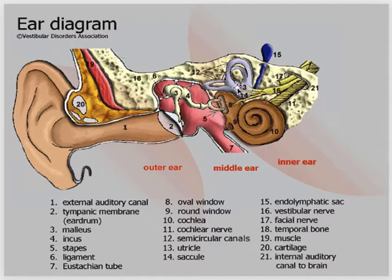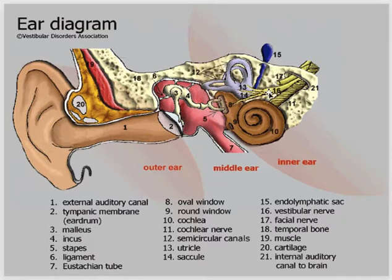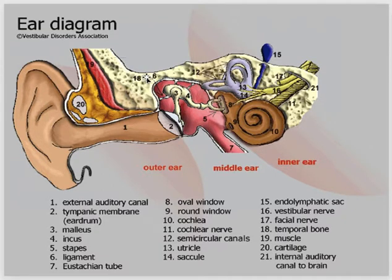There are semicircular canals with different parts — the utricle and the saccule — and the vestibular nerve comes out from here. Together these two parts make the vestibulocochlear nerve. You can also see the endolymphatic sac, the facial nerve, and structures related to the temporal bone, muscle, cartilages, and the internal auditory canal.